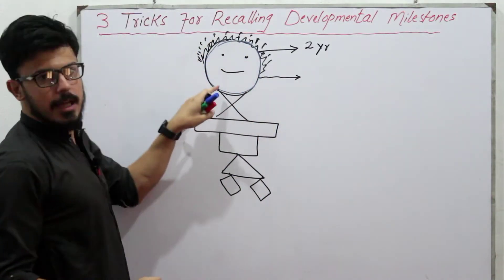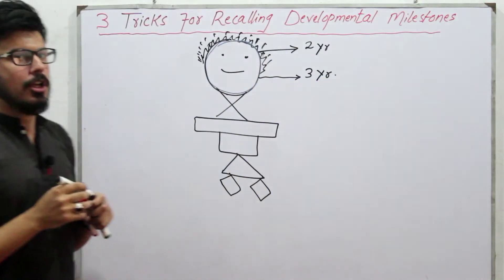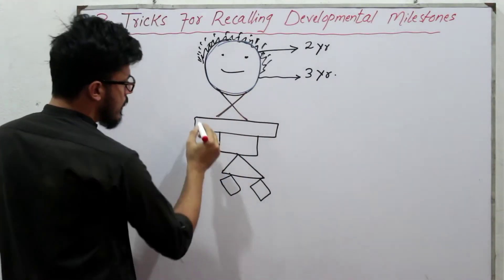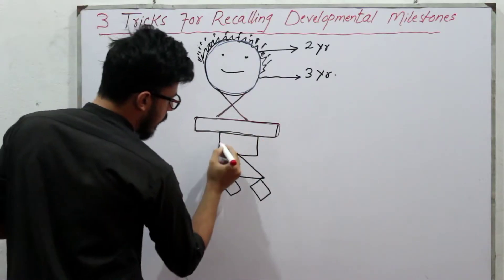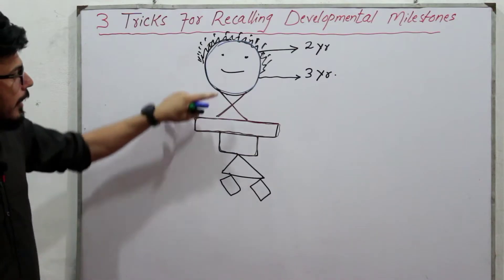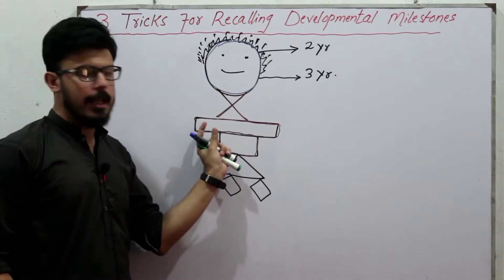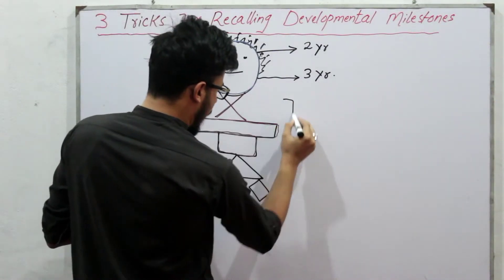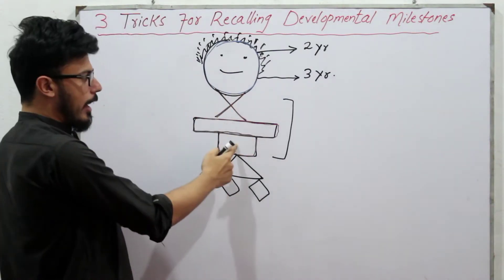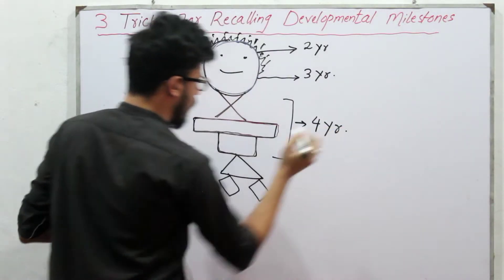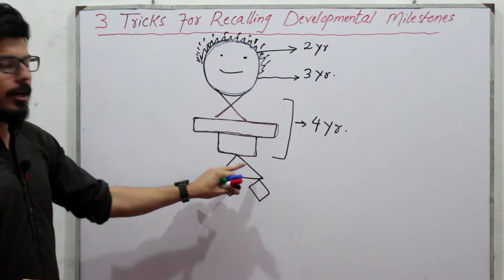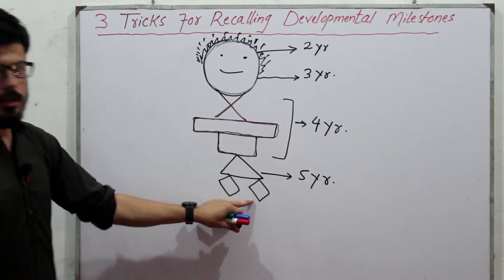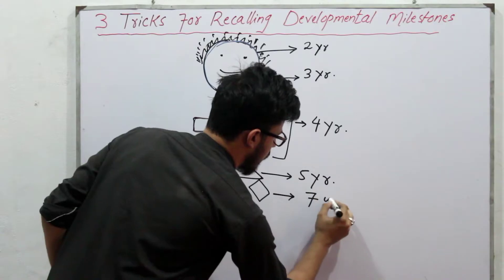A normal child can draw a circle at three years of age. Now just focus on this area: this is a cross, this is a rectangle, and this is a square. A normal child can draw a cross, rectangle, and square at four years of age. A normal child can draw a triangle at five years of age, while a normal child can draw a diamond at seven years of age.